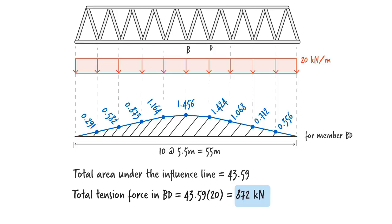Since the influence line does not have any negative area, no compressive force develops in member BD, regardless of the position and length of the load.